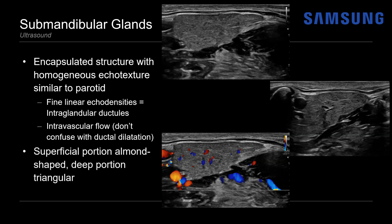Like the parotid gland, there are superficial and deep portions. The superficial aspect is more almond-shaped, whereas the deeper portion has more of a triangular configuration. Adjacent landmarks to be aware of include the mandible and the mylohyoid muscle — the gland will be located between the mandible and the mylohyoid. I'll go into this anatomy in more detail shortly.